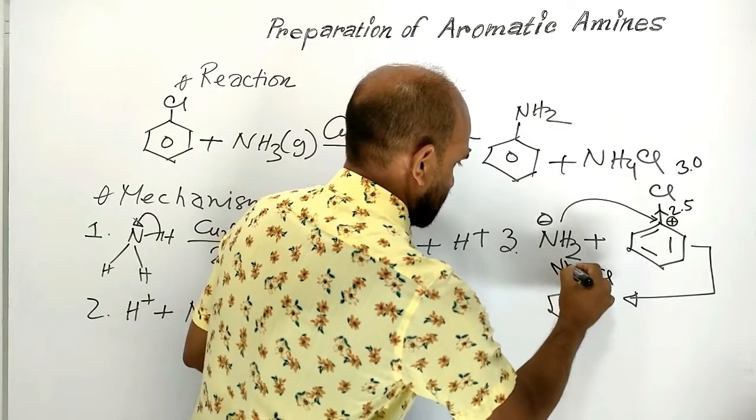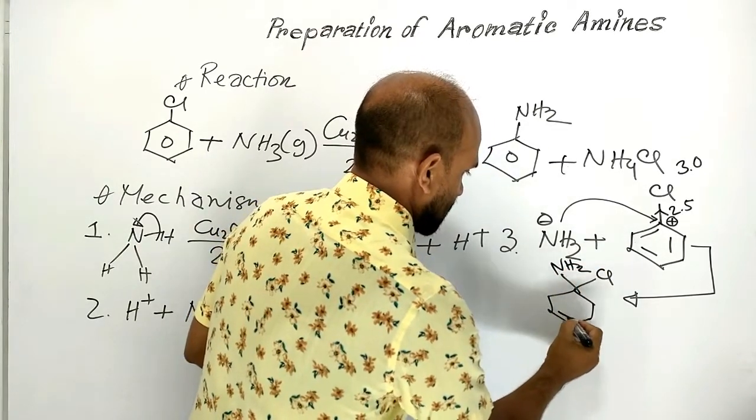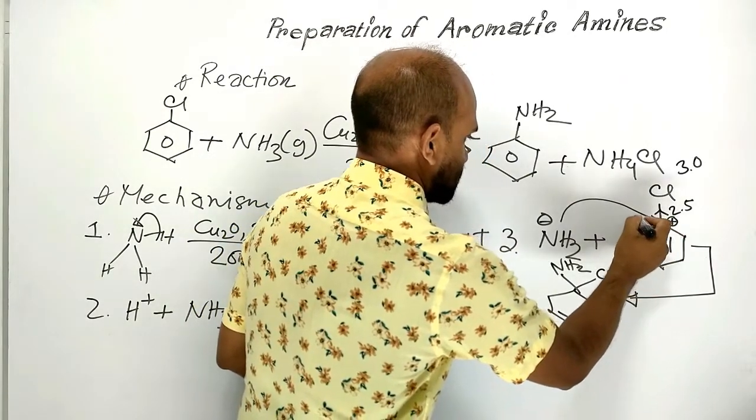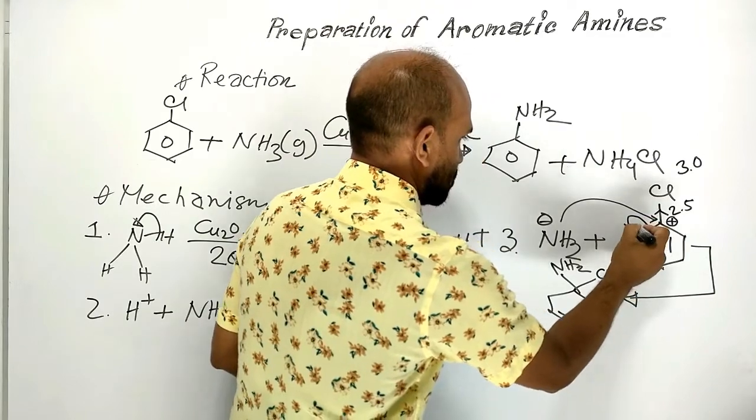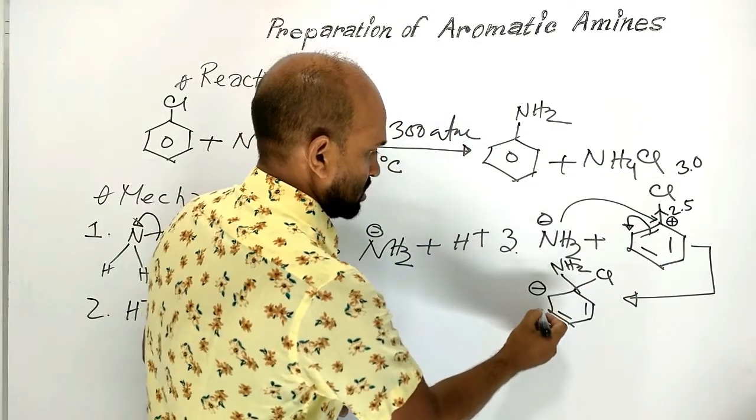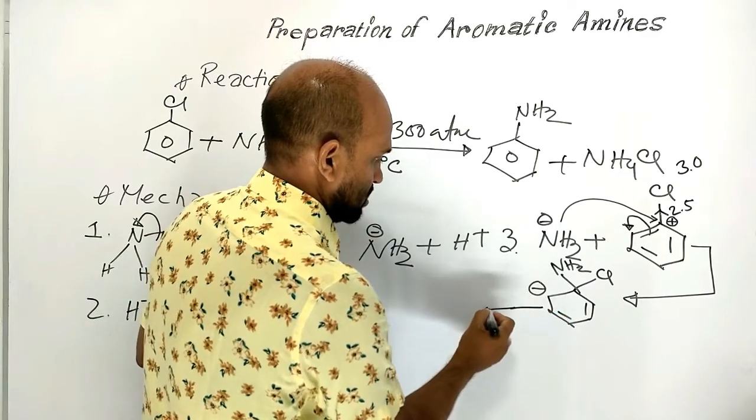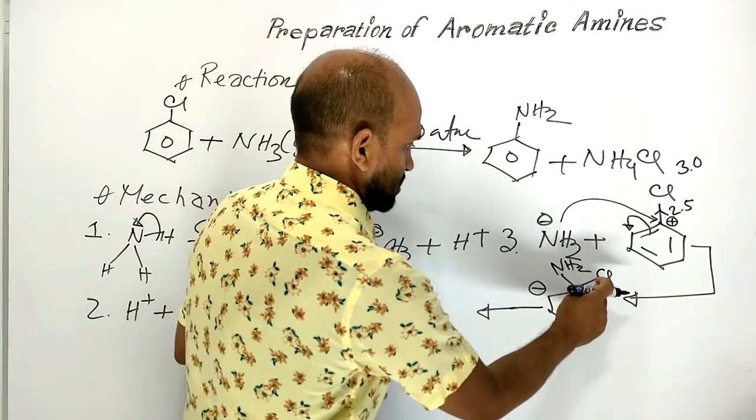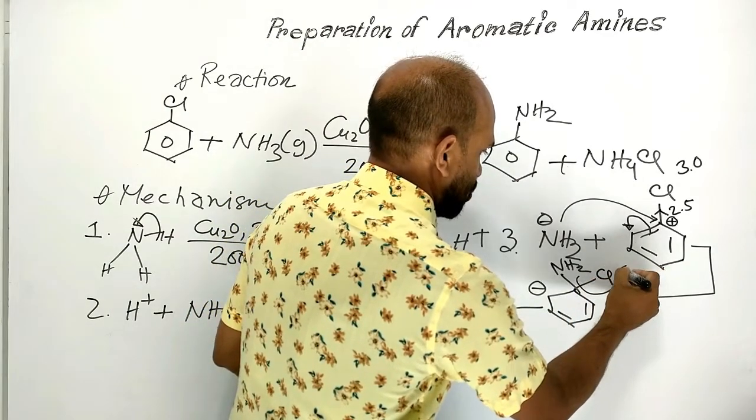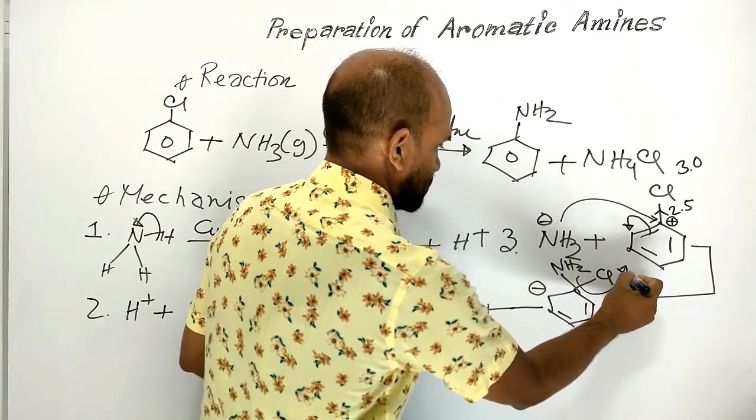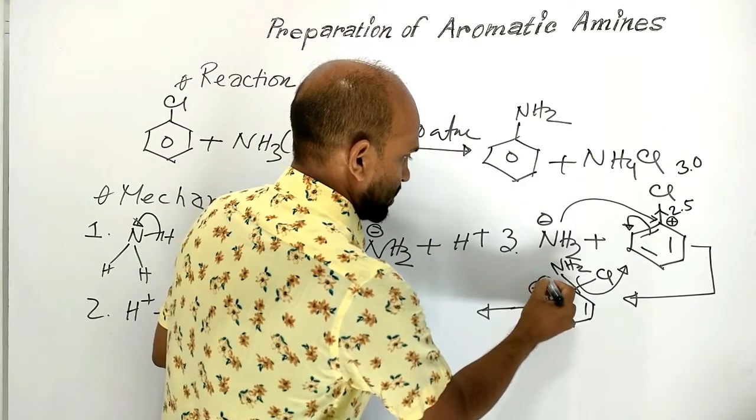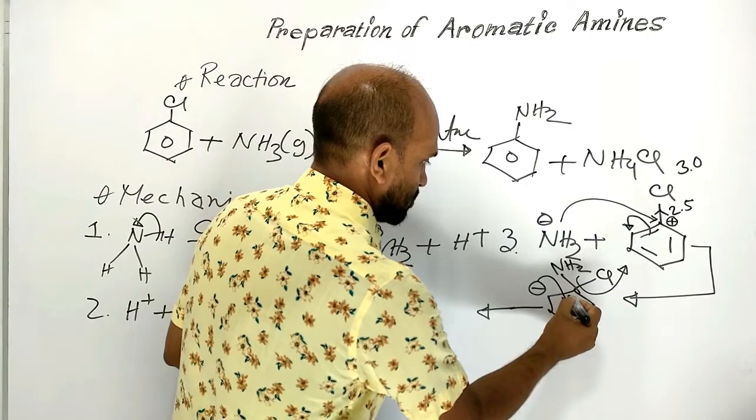Chlorine, NH2, double bond, double bond. Here pi bonded electrons turn into lone pair of electrons in this way. Then this chlorine leaves this molecule with covalently bonded electrons and at that time this lone pair of electrons turn into bond pair.